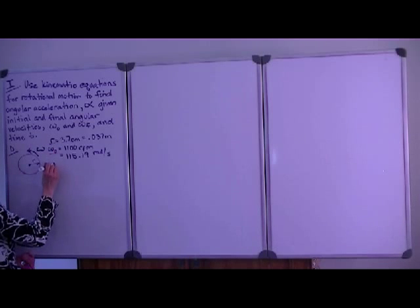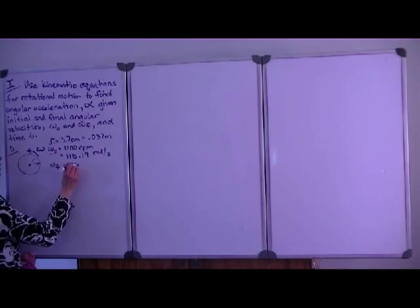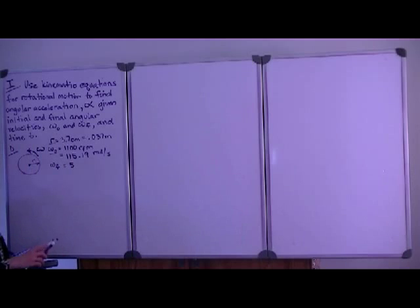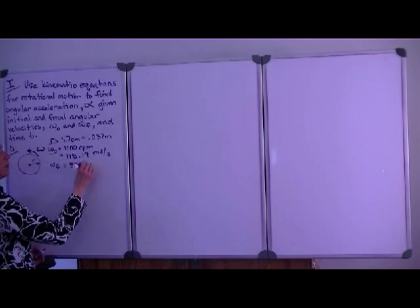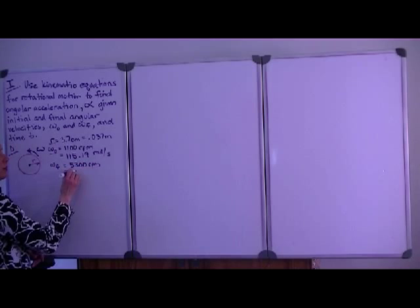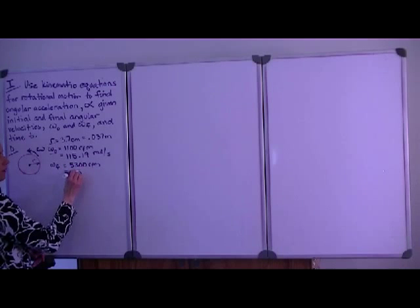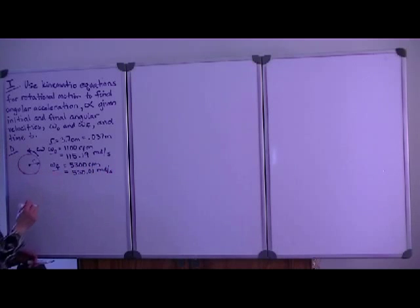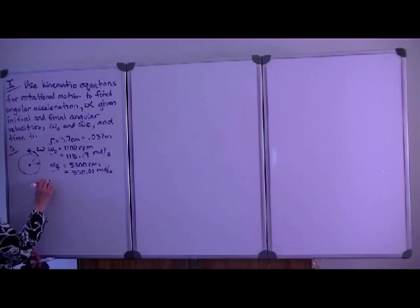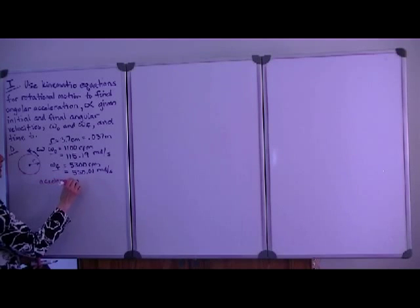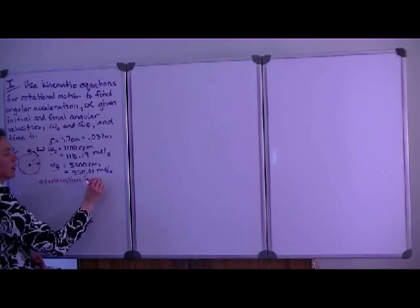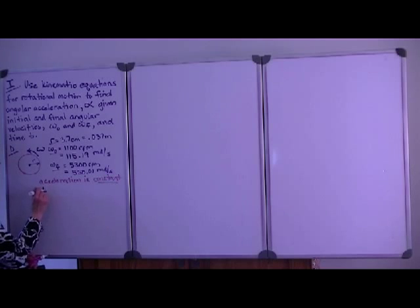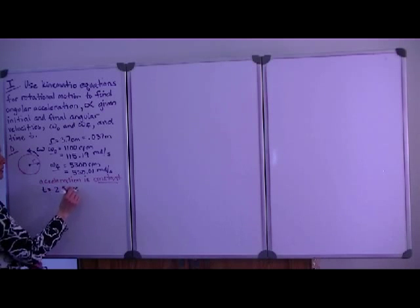Now our final angular velocity, we're told, is 5300 RPM, which converts to 550.01 radians per second. Okay. We're told that acceleration is constant. That's important because that means that the kinematic equations apply. And we're told that the time that all this is happening in is 2.5 seconds.